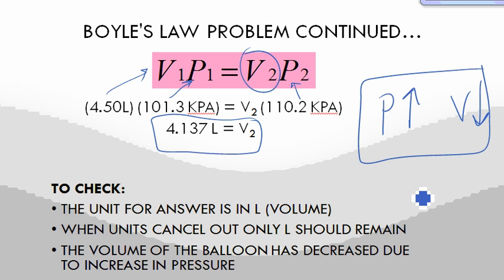Things you need to be aware of: make sure your units are in liters for volume. Volume is always measured in liters. When you cancel them out, you should only have liters remaining. You should make sure that it makes sense - the volume of the balloon should decrease because you have an increase in pressure. Remember that inverse proportional relationship. And that's Boyle's Law.